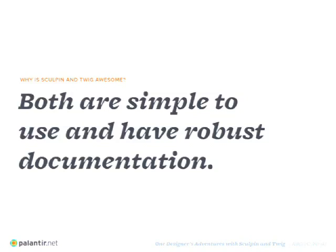Another reason they're awesome is both are simple to use and have robust documentation. Twig has a list of all the functions, filters, and things that are inherent in it, so you can go online and check out the different tags and functions. A nice thing about Sculpin is it has a skeleton site you can just pull down and test out, run straight from your computer. It has basic templates set up, basic tag structure set up, and things like that. So it's pretty simple to just pull it down and start poking around without having to build from scratch. There are a lot of ways to get your foot in the door — even just reading the documentation for a day or pulling down the skeleton and poking around.